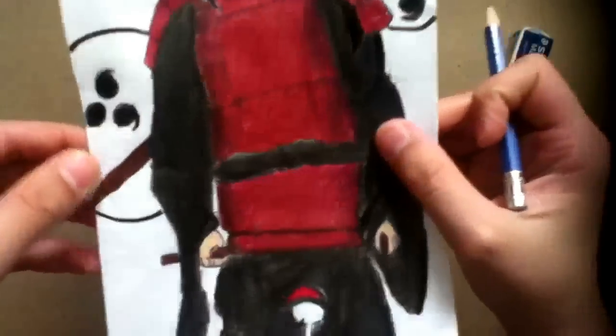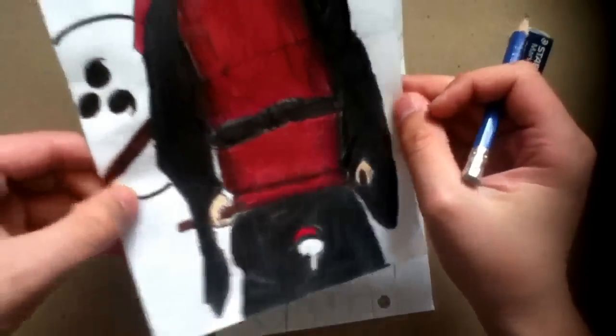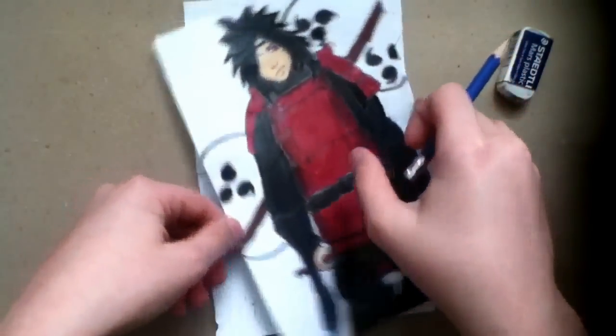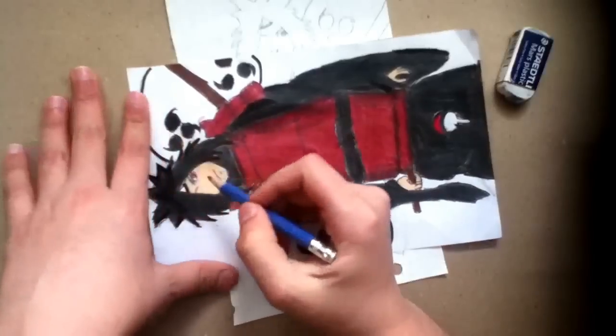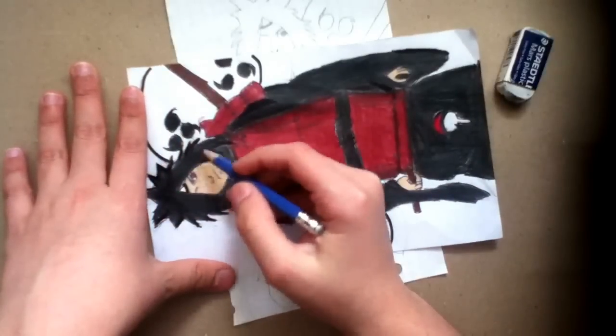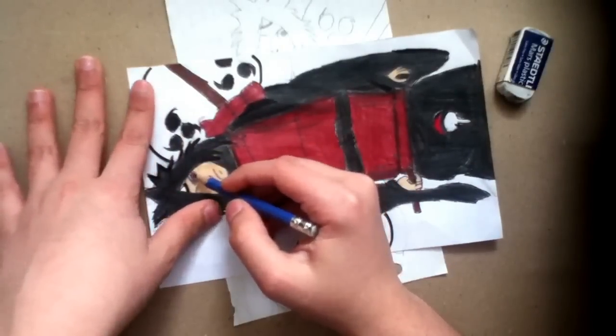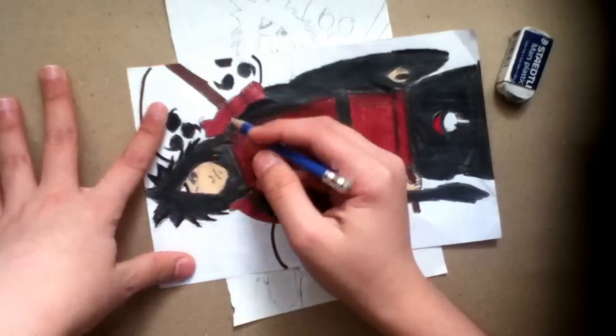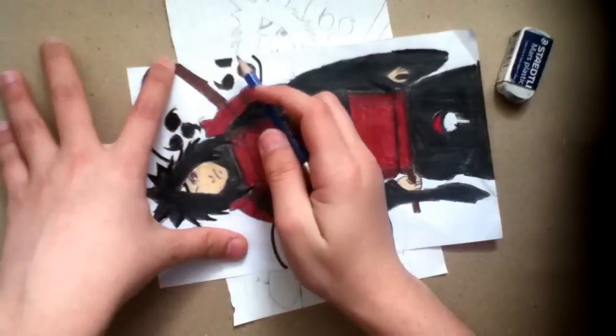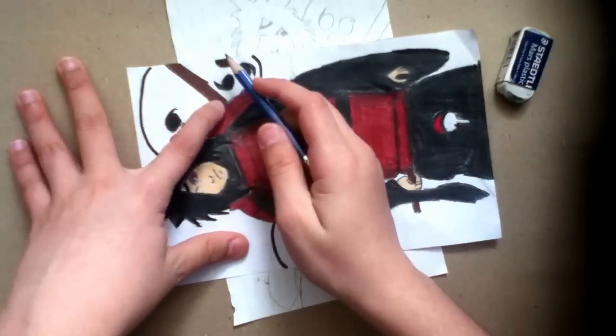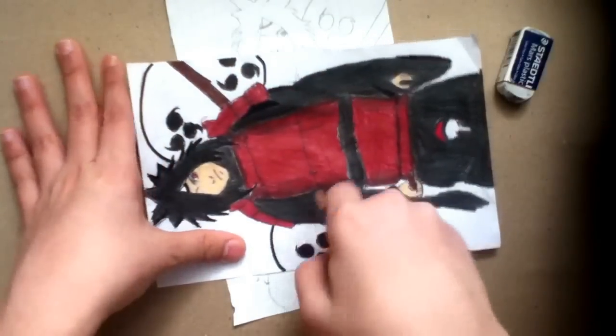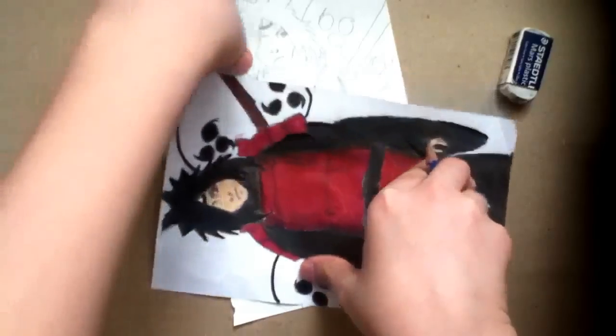So I colored the armor red, and most of the rest of his part is black and red for his skin. The eye is red. I mean skin color for his face, and his eye is red. The pole for the fan is brown. So I'll leave it like this.